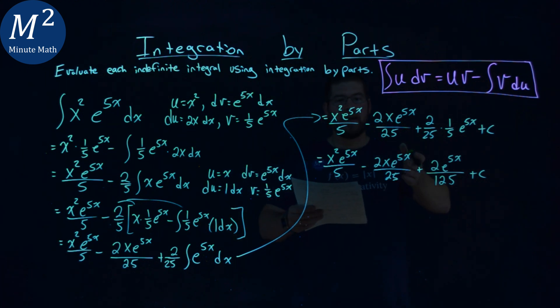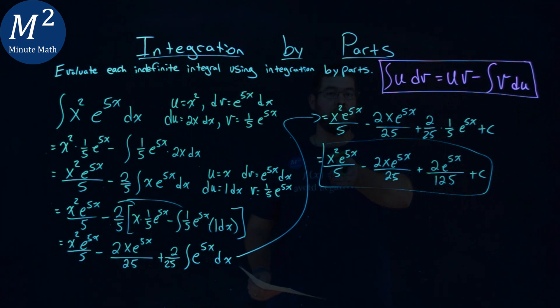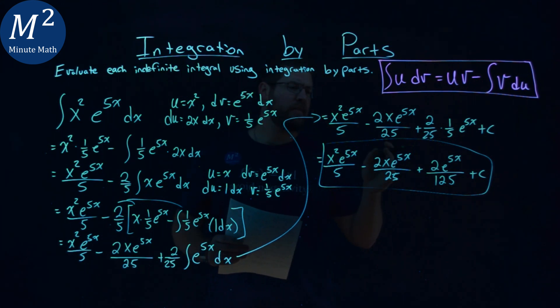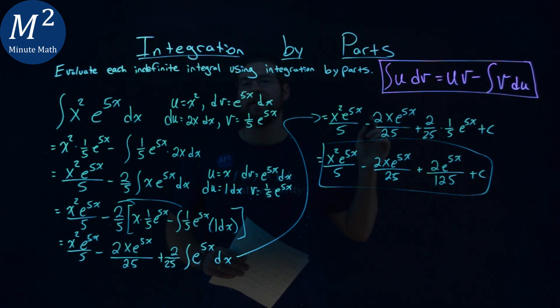And after all of that, we have our final answer: x squared e to the 5x over 5 minus 2x e to the 5x over 25, plus 2 e to the 5x over 125, plus c.